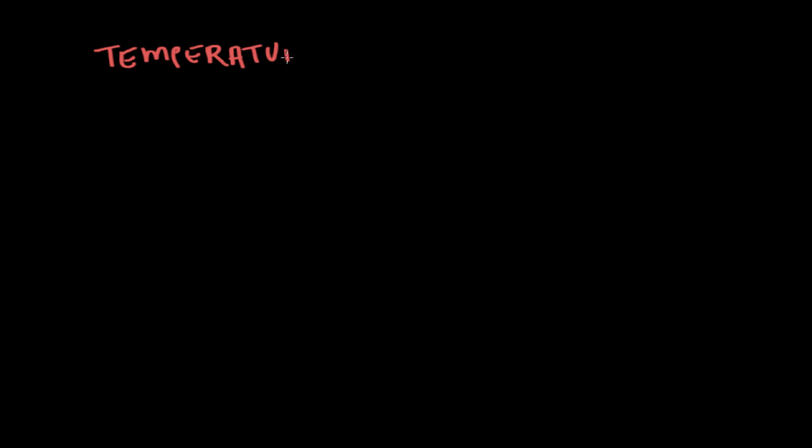All bodies and systems possess a property called temperature. Most commonly, temperature is used to refer to how hot or cold something is. But the scientific definition of temperature is that it's a measure of the average kinetic energy of the particles in a system.